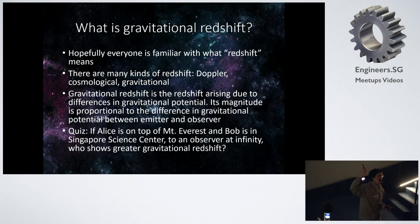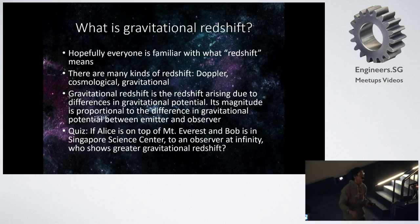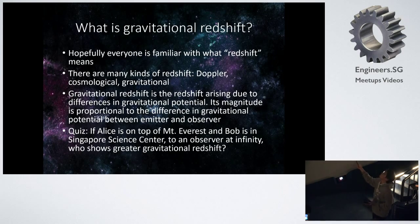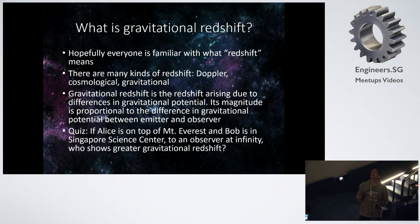Hopefully everyone knows what redshift is. If you don't, we are in a science center, so hopefully there's an exhibition somewhere that will tell you. The key point in this talk is that there are many kinds of redshift: there's the Doppler one, which happens when something is moving towards you or away from you; there's a cosmological one, which happens because the universe is expanding; and there's a gravitational one, which is because of differences in gravitational potential.